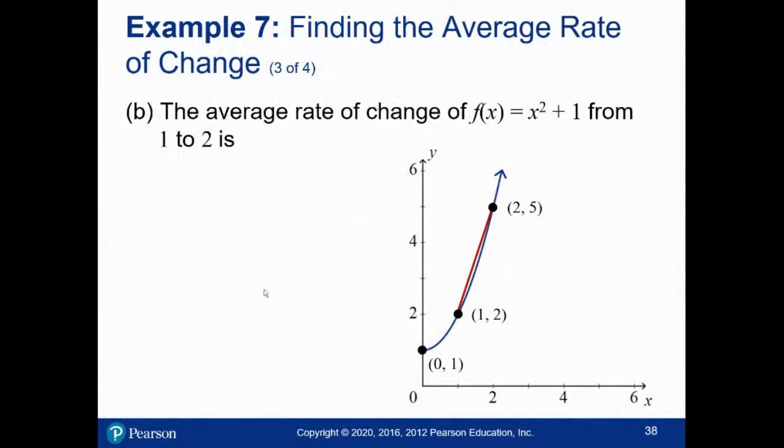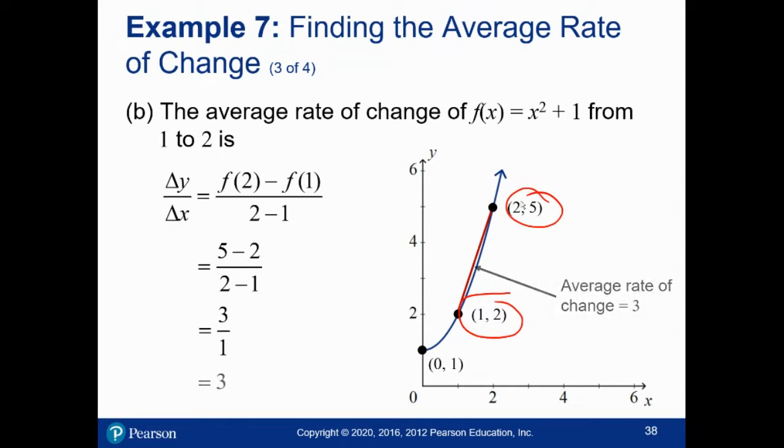For part B, we're looking at the slope of the line connecting these two points. We're going to use F of 1 is 2, but F of 2 is 5. So if I replace F of 2 is 5 and F of 1 is 2 over B minus A, that's 2 minus 1, we get 3 over 1 or 3. The slope of that line or the average rate of change of the function is 3.